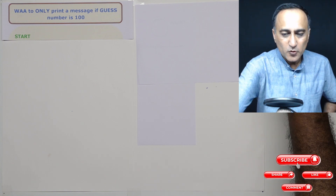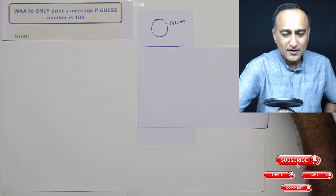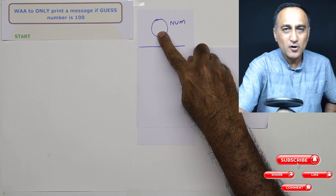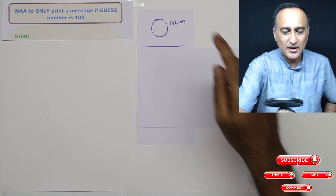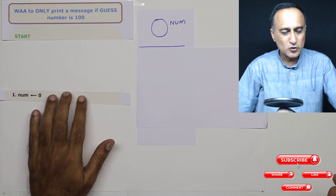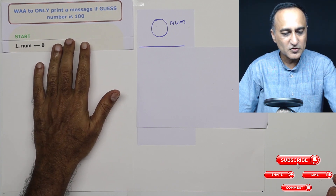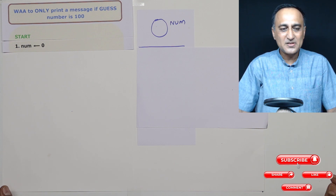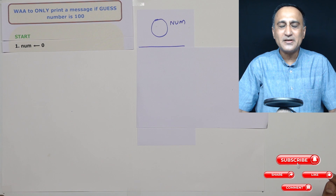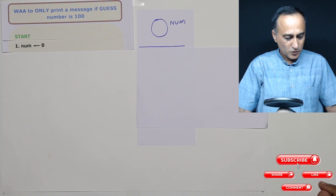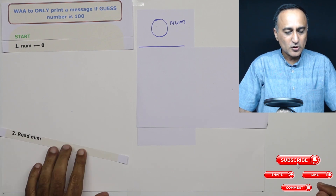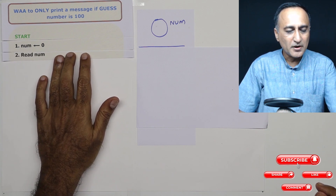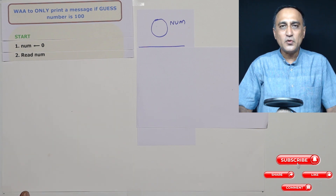In order to solve this problem, we're going to declare a variable called 'num'. It is going to represent a memory location where the user is going to enter a number. Step one: give the number an initial value of zero. Step two: ask the user to enter a number. Step three: read a number from the keyboard which the user is going to enter.